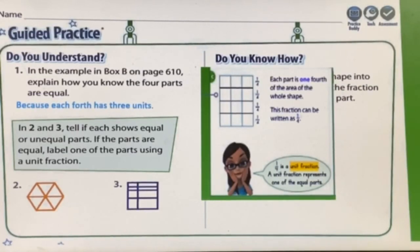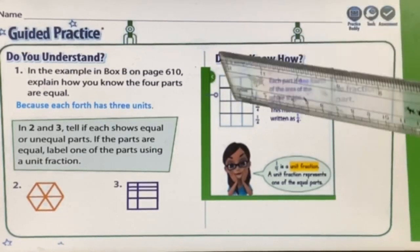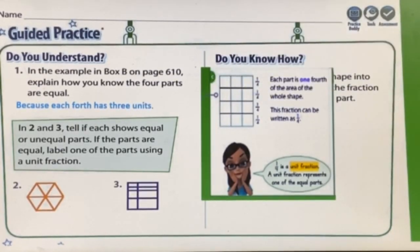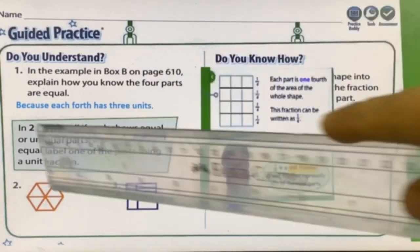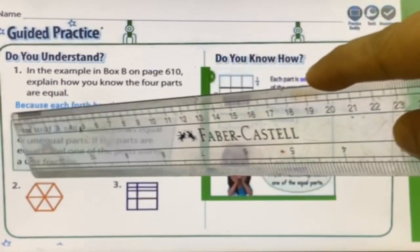Each fourth has three units — one, two, three — that's why we know the four parts are equal. For questions two and three, we label the pictures as equal or unequal parts, and if equal, we write a fraction for one part. Writing a fraction for one part means the numerator is one and the denominator is the total number of parts in the picture.